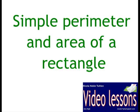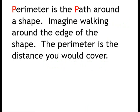Today's lesson is on simple perimeter and area of a rectangle. The perimeter is the path around a shape. Imagine walking around the edge of the shape; the perimeter is the distance you would cover.